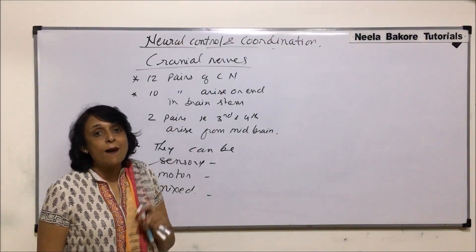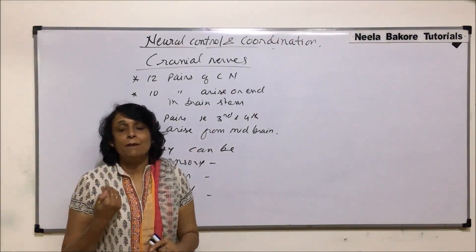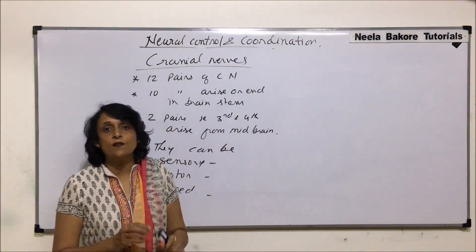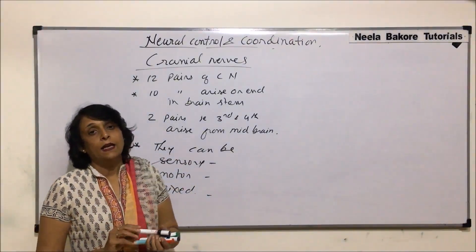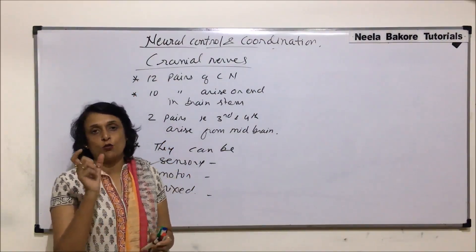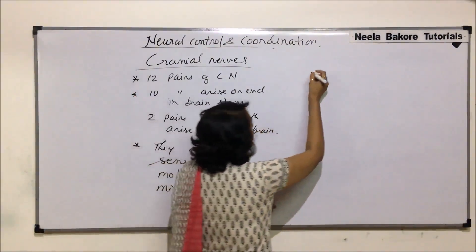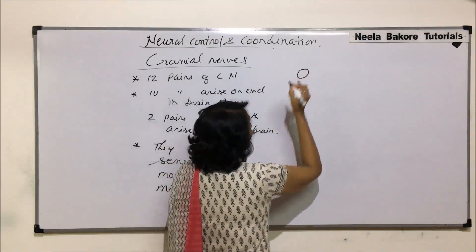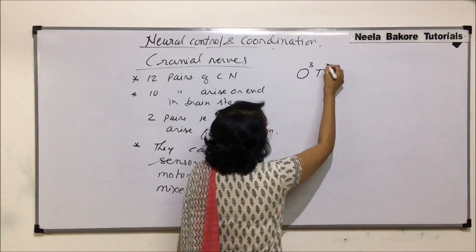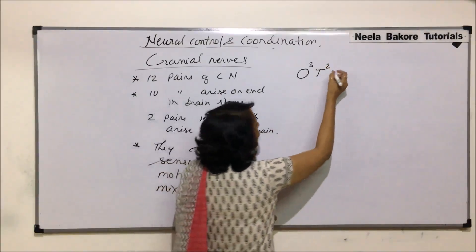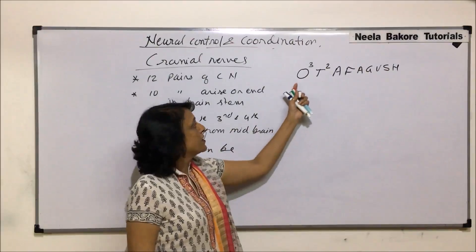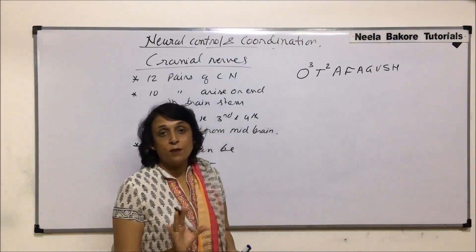There are 12 cranial nerves known by their numbers and names. Questions are often asked like 'what is the fifth cranial nerve?' or 'what is its nature?' so we need to remember them in the correct sequence. It is always good to have a shortcut formula. The first three cranial nerves start with O, then two with T, then F, two A's, G, G, V, S, and H — giving us 12 in total.